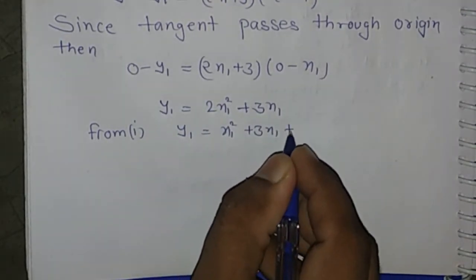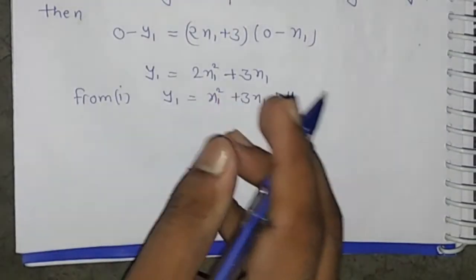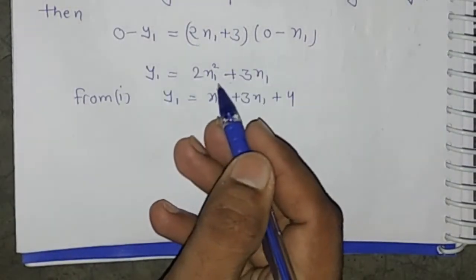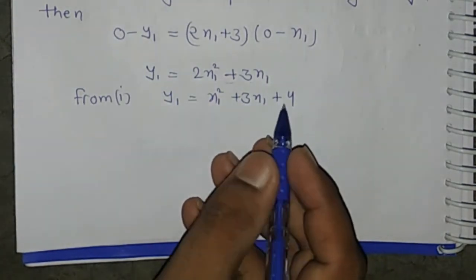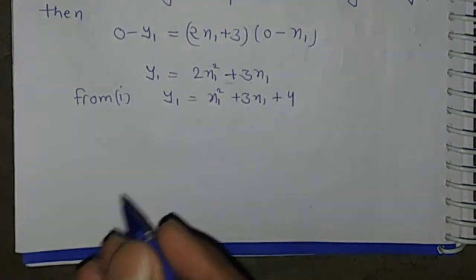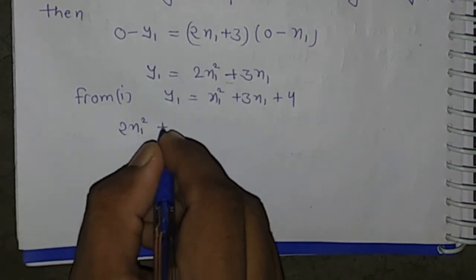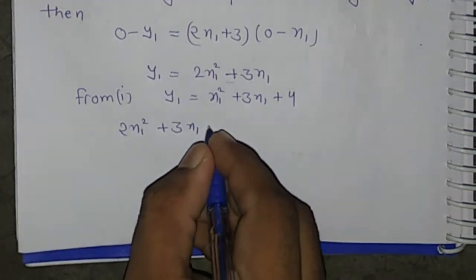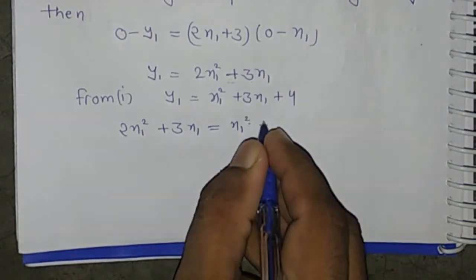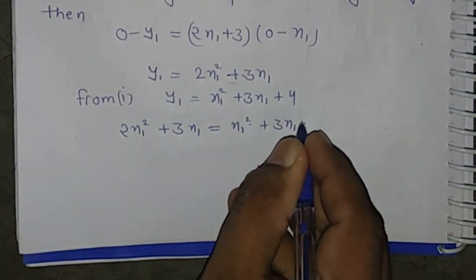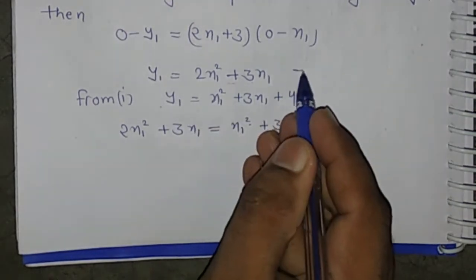From equation 1, y₁ = x₁² + 3x₁ + 4, and from equation 2, y₁ = 2x₁² + 3x₁. Substituting: 2x₁² + 3x₁ = x₁² + 3x₁ + 4. This simplifies, giving us equation 1 and equation 2 combined.